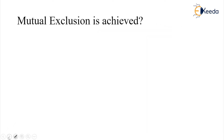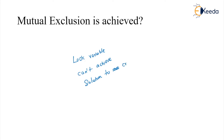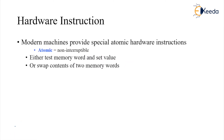Using only lock variables, we cannot achieve mutual exclusion for the critical section problem. We need hardware support — specifically, we need special instructions such that no interrupt can occur during their execution.